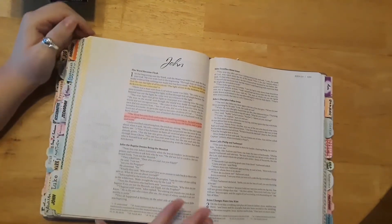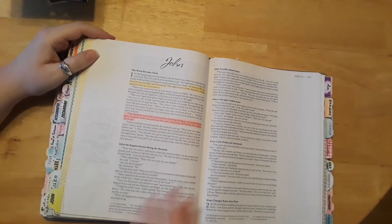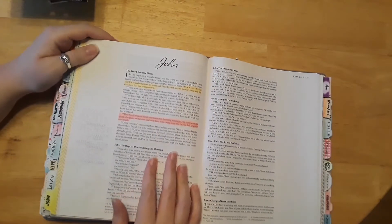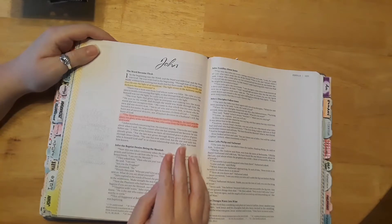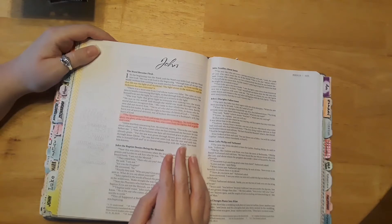Okay, so we will be journaling in John chapter 1 verse 4, and it says: In him was life, and that life was the light of all mankind. The light shines in the darkness and the darkness has not overcome it.